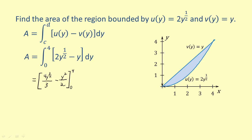Substituting the limits of integration, we get 4 times 4 to the three halves over 3 minus 4 squared over 2. Substituting 0 will just give us 0.